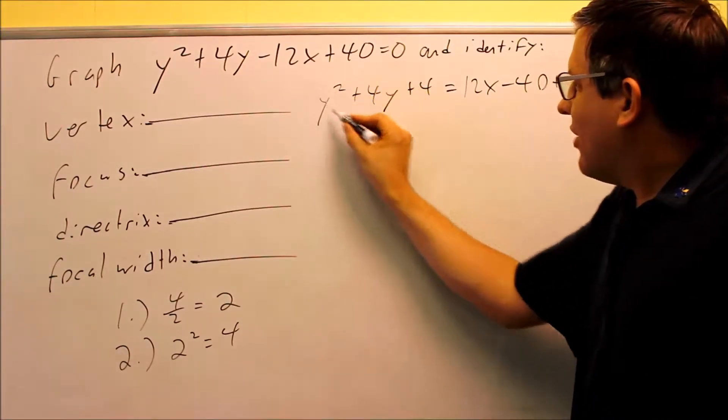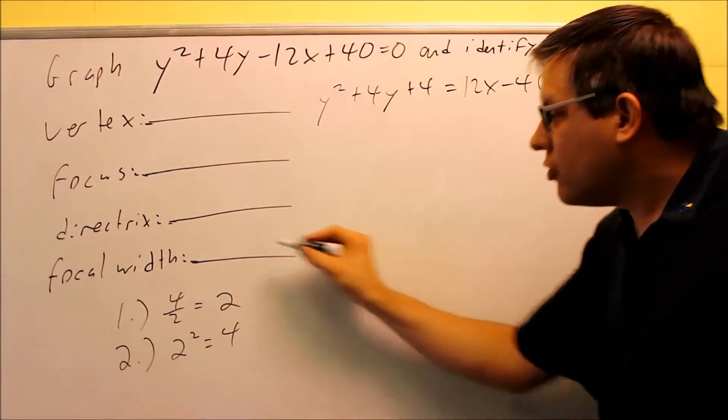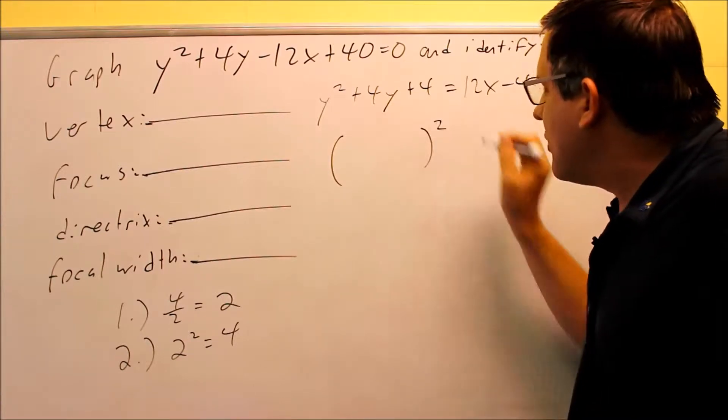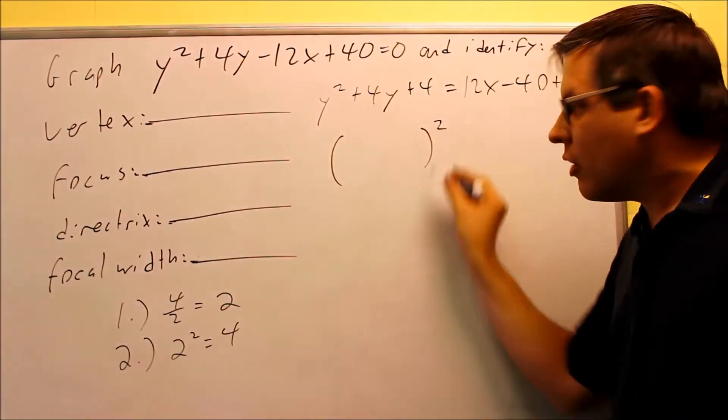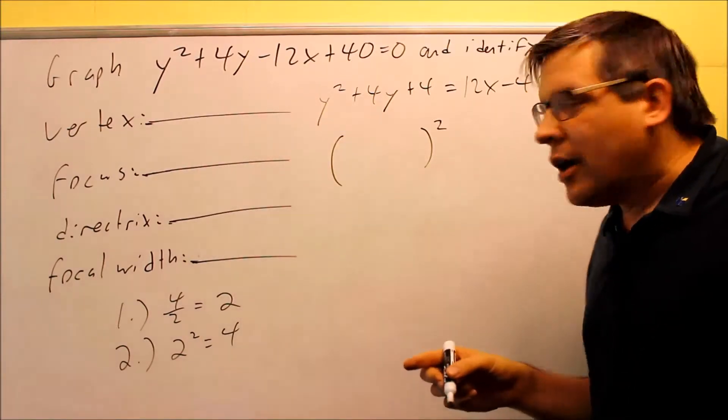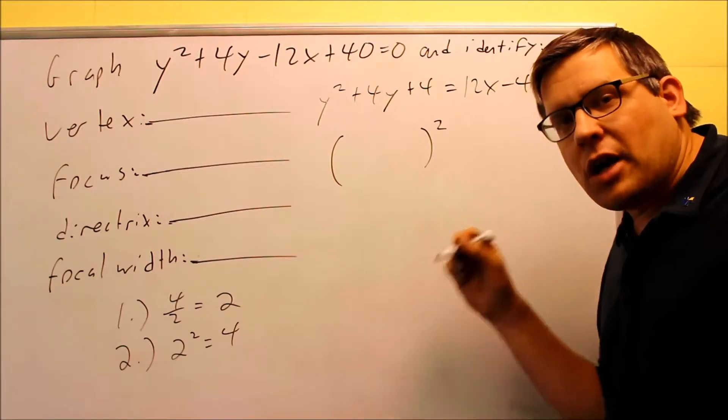Now I'm going to take this and I've created a perfect square now. That's the whole purpose for doing the complete the square steps. I get something now that will factor into this and this is what we want. We want it to go into this form because that's how we can tell the vertex based on the other examples we've done previously and it matches our models as well.